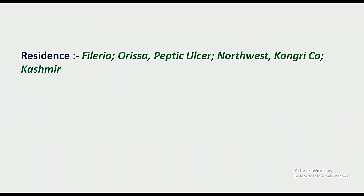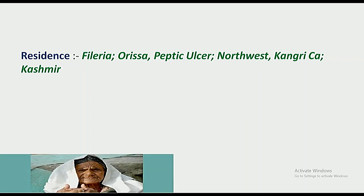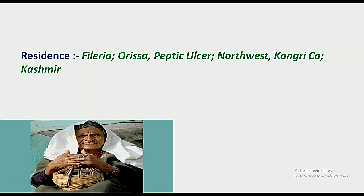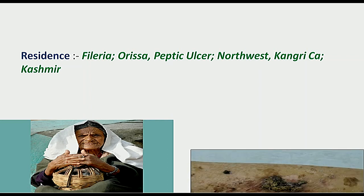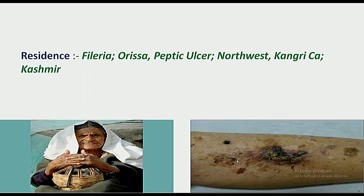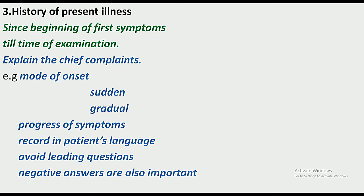Residence is also very important. For example, filariasis is region-specific, and kangari carcinoma is seen in Kashmir — where a lady holds a kangari (a heating device) close to the body surface, causing burns that lead to kangari carcinoma. History of present illness covers from the beginning of the first symptom to the time of examination, and involves explaining the chief complaints in detail.